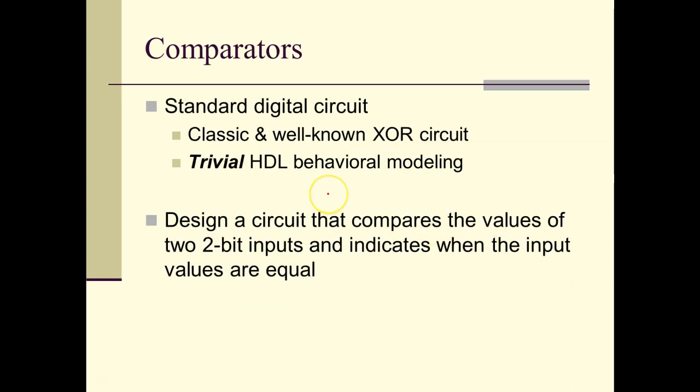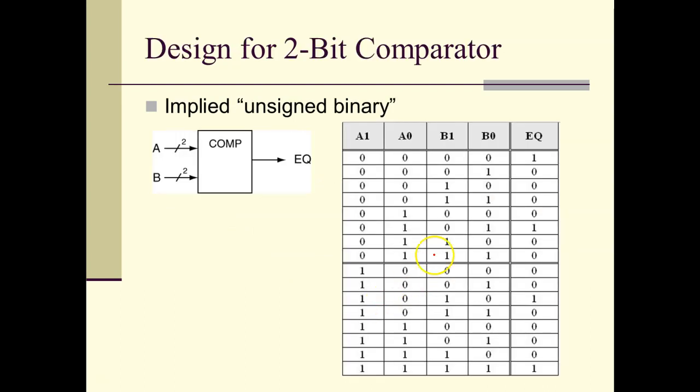Comparators are a standard circuit in digital design, a well-known XOR circuit you should read about in the book. It's a complicated circuit to design with gates, but actually a trivial circuit to design with behavioral modeling. This is a quick example of a 2-bit comparator with only one output: equal. This is a brute force design method.